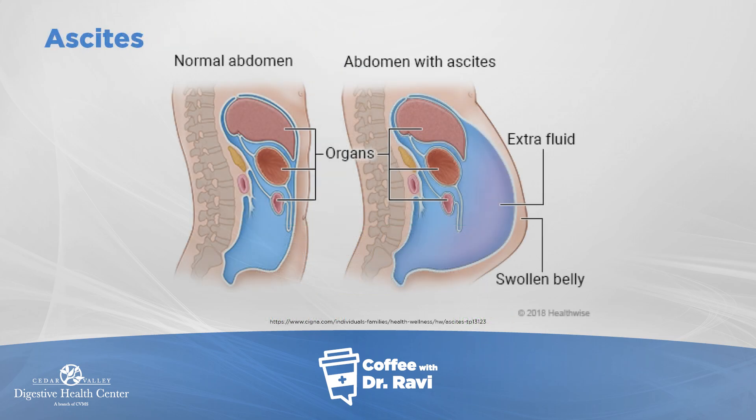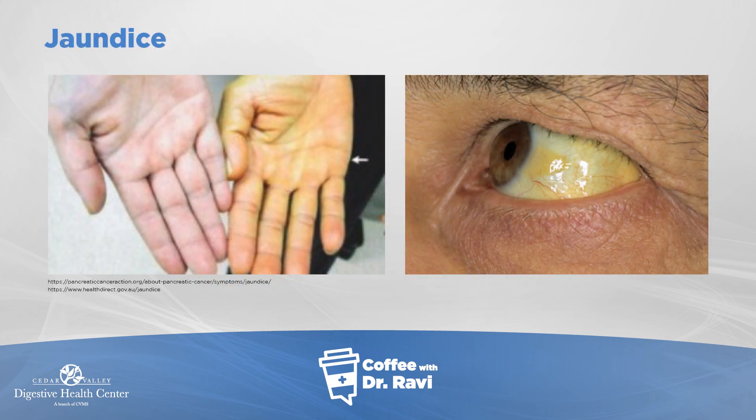Another sign of liver disease is fluid development in the belly, called ascites. Occasionally patients tell me they think they're putting on a lot of weight. Weight gain can put fat around the gut, but sometimes fluid buildup inside the belly causes it to puff up — that's ascites. Most times there's also leg edema, where fluid causes the legs to become swollen. Yellow jaundice — either in the white of the eye or in the palm of the hand — can also be a sign of liver disease.